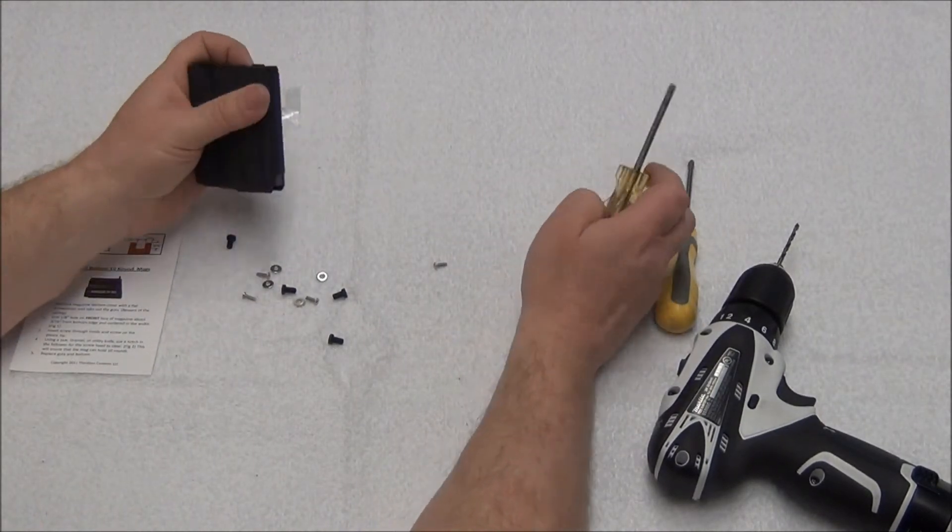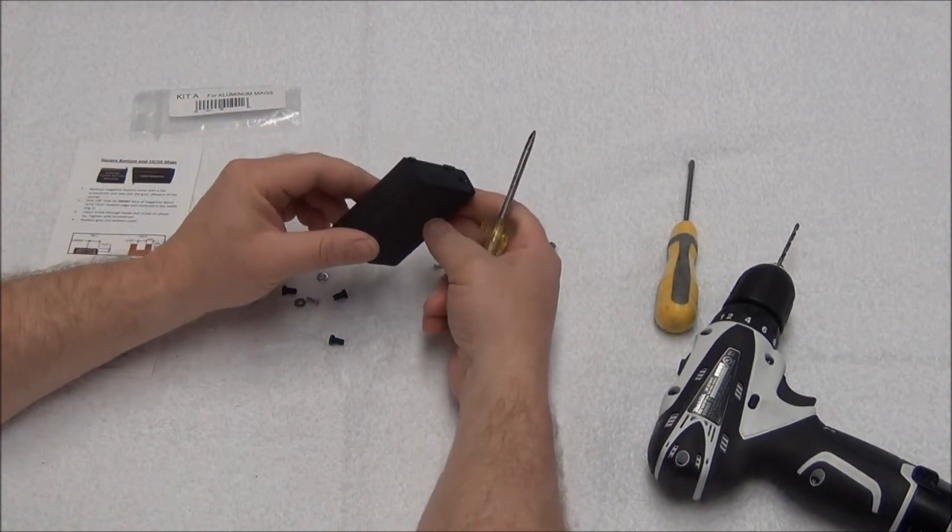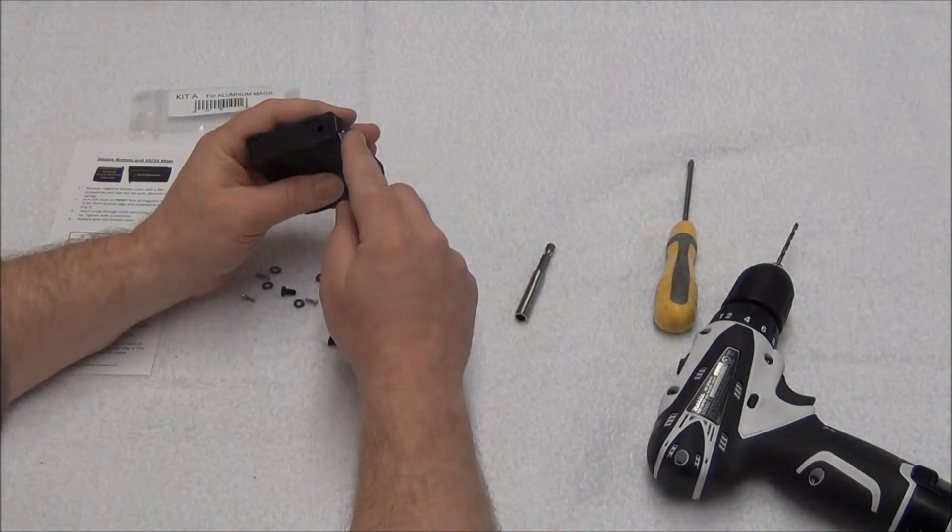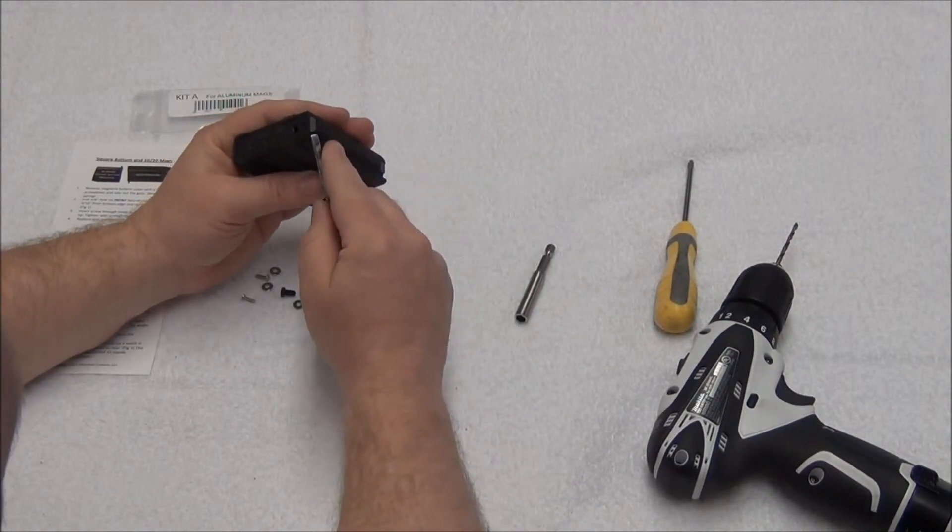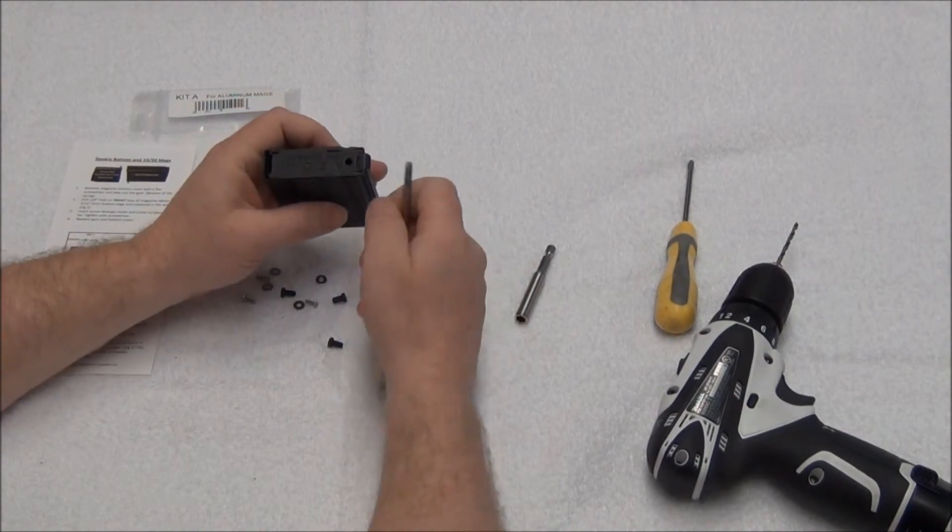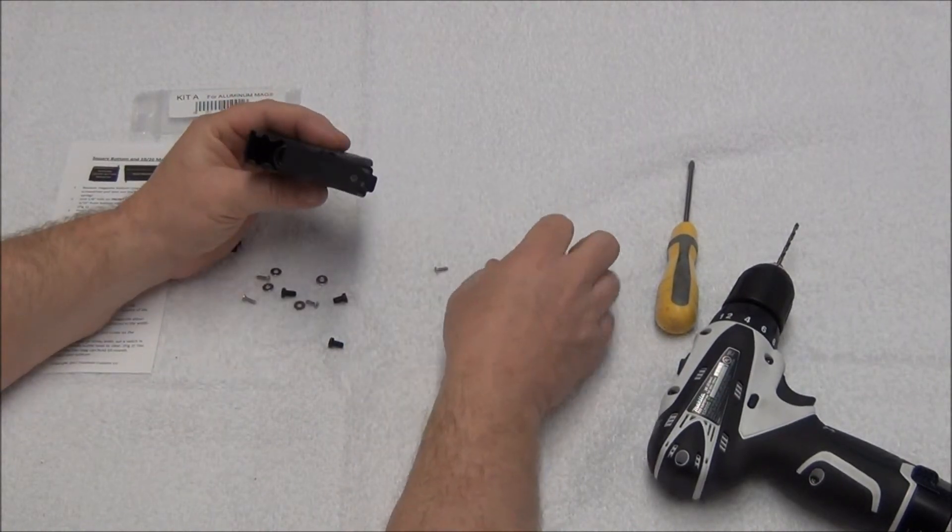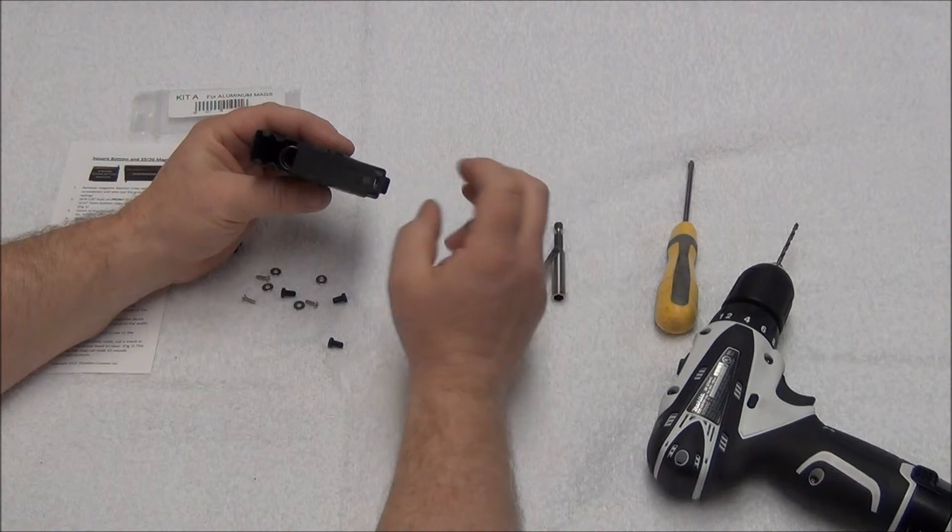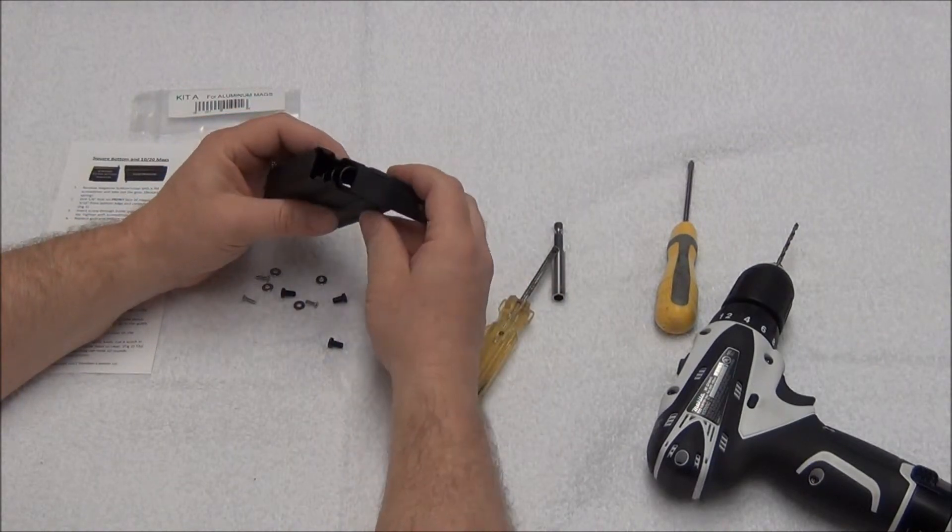What we want to do is take our 10 round magazine and pop the bottom cover off. Take your little flat head screwdriver here, just give it a little twist. Off it comes, about halfway like that. You don't need to take it all the way off and risk getting hit in the face by the spring.